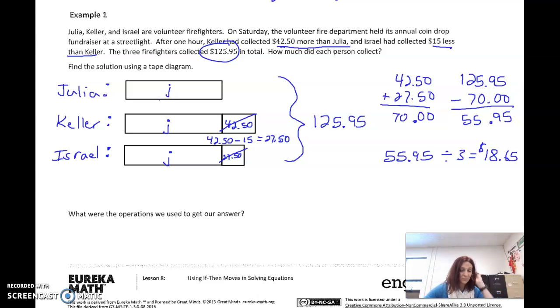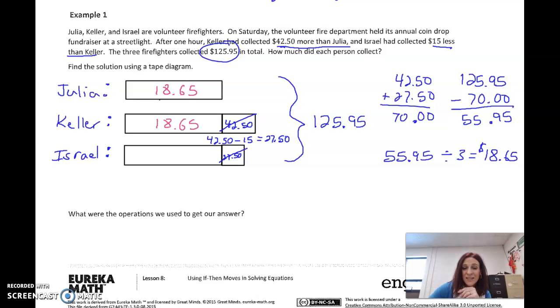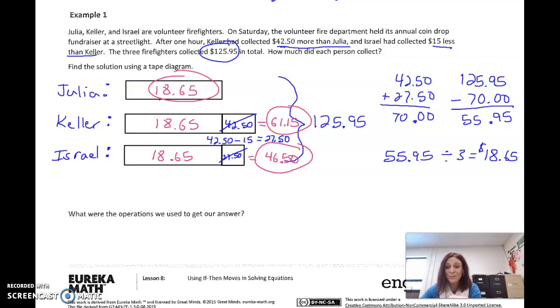Now I'm going to take that $55 just like we did the other day, and we're going to divide it by 3, and that works out to be $18.65. So what does that mean? It means that Julia made $18.65. Keller made $18.65 plus the $42.50, so that would equal $61.15. Israel is going to make what Julia made, the $18.65, plus the $27.50 here for a total of $46.50. So we get the three amounts they made using a tape diagram and then just subtracting off what was added on.